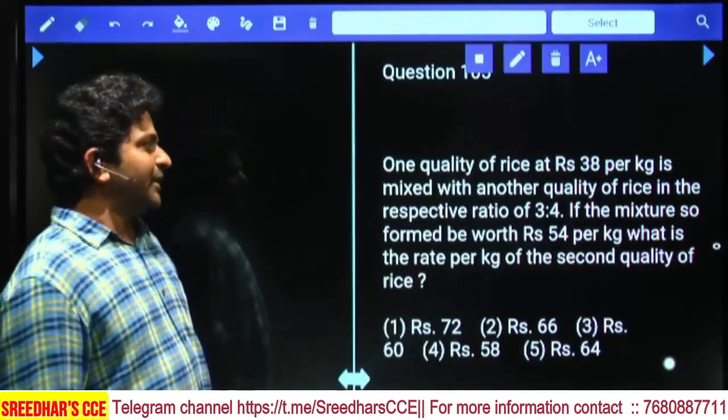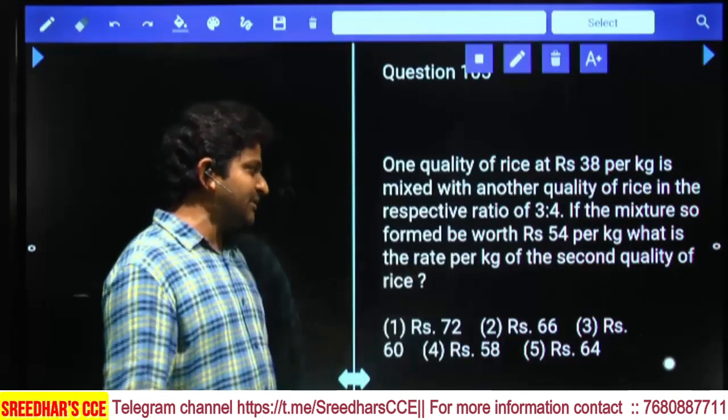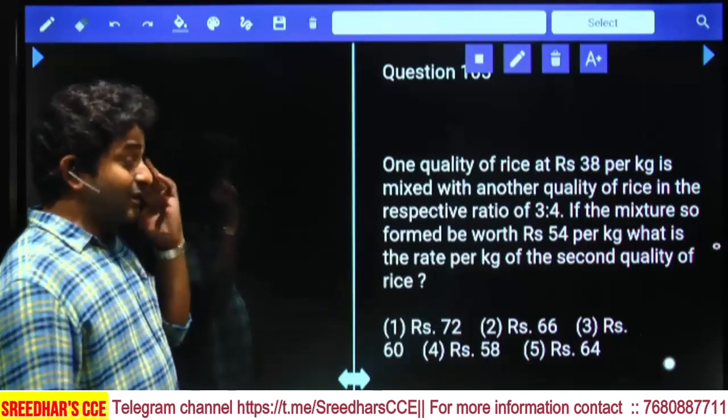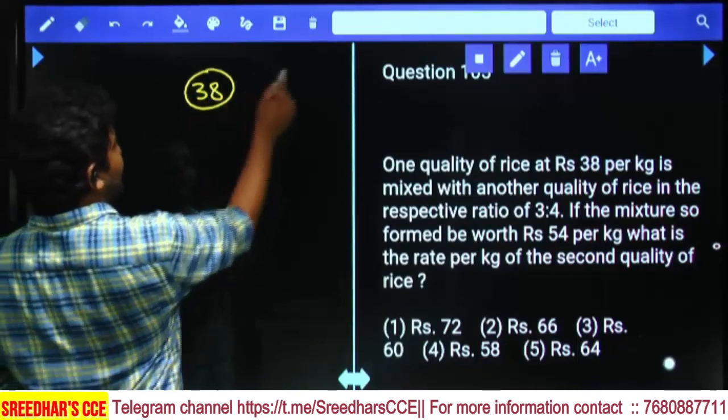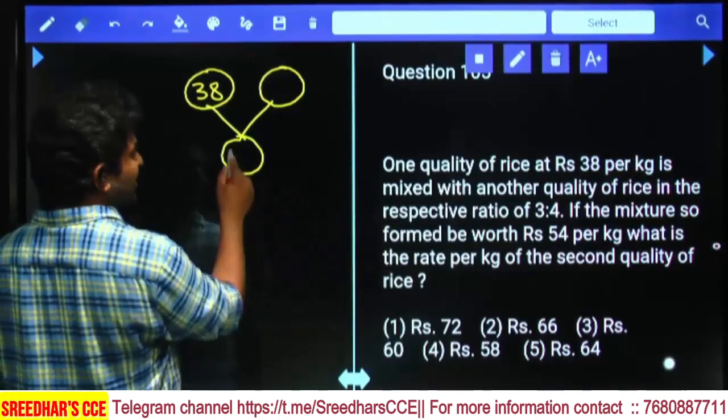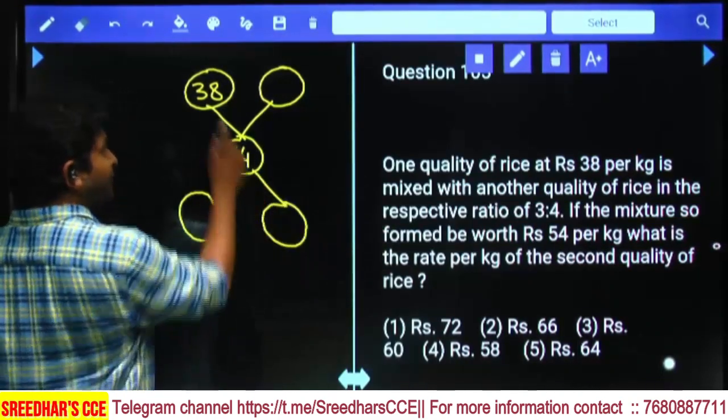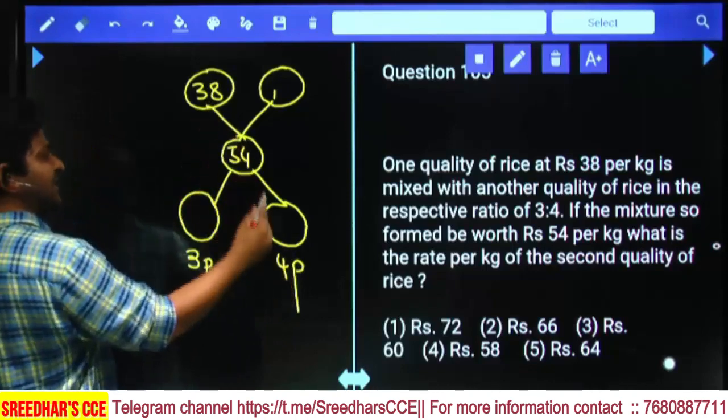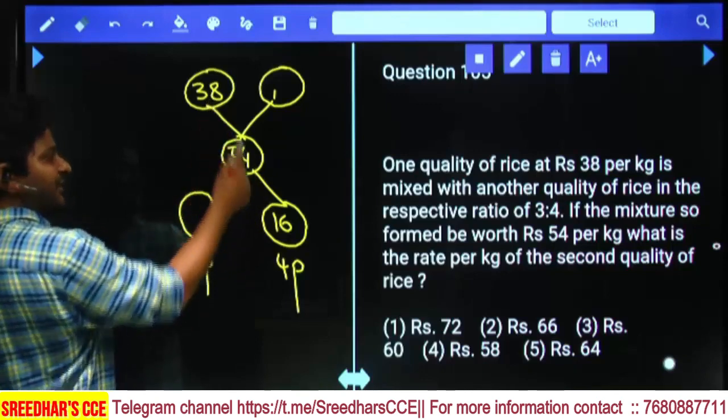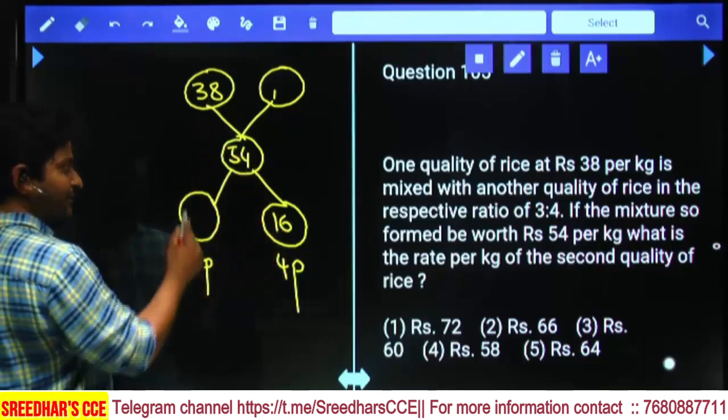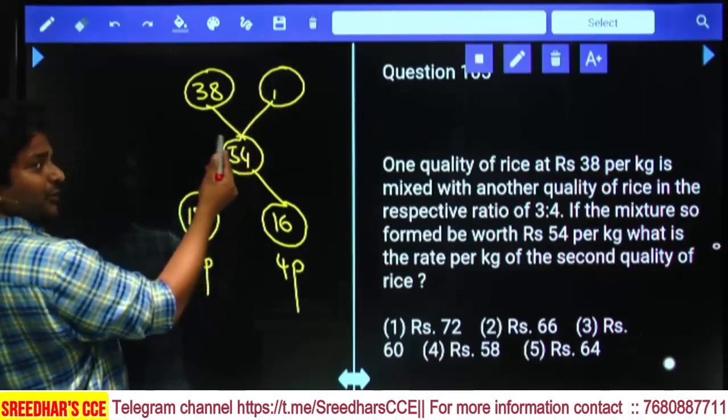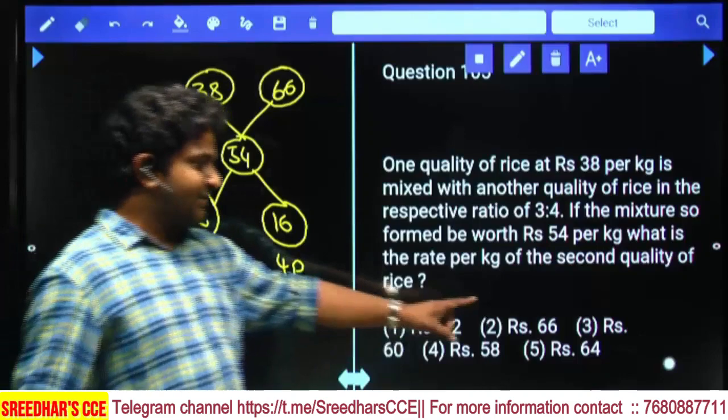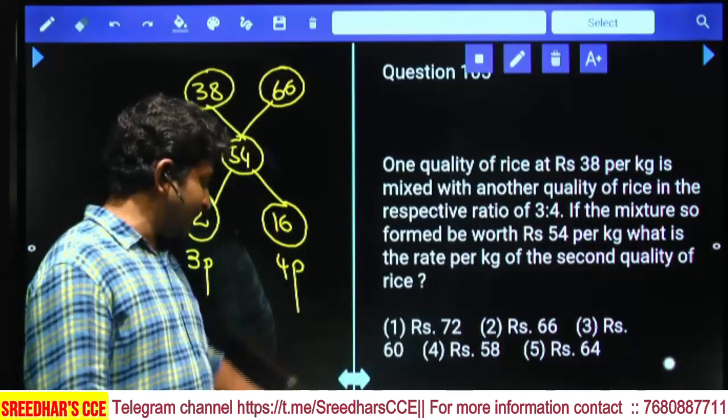One quantity of rice at Rs 38 per kg is mixed with another quality in the ratio 3:4. If the mixture is worth Rs 54 per kg, what is the rate per kg of the second variety? First variety is 38 rupees, second we don't know. When we mix them the cost is 54. The difference is 16. If 4 parts equals 16, then 3 parts equals 12. So this number should be 54 plus 12, that's 66 rupees. Second option, using allegation method.